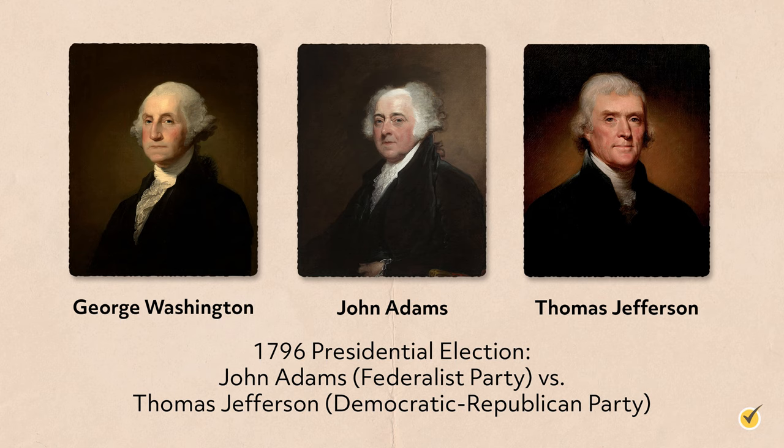Adams represented the Federalist Party while Jefferson ran on the Democratic-Republican ticket, usually known as the Republicans. It should be noted that the terms Democrat and Republican have somewhat fluid definitions and did not necessarily mean the same thing as they do today. Washington warned against party politics in his farewell address but could do little to dissuade the growing influence and polarization of the parties. In the end, Adams won by three electoral votes and a slim majority of the popular vote. Jefferson became Vice President as per the rule that the runner-up in the election would serve as Vice President, and spent much of his time working in the background to win the presidency in 1800.